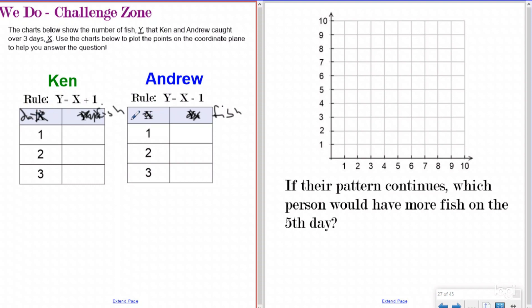So now they're giving us, it's the same type of problem, but now they're telling us what our X and Y axis is. So our X axis is going to be our days. And then our Y axis is going to be the amount of fish that we caught. So we still have to do the same thing. We have to answer the question using our pattern chart.